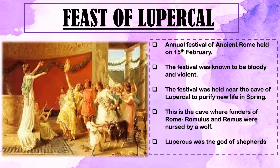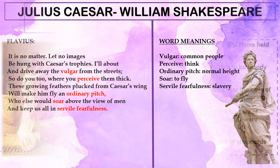The Feast of Lupercalia was celebrated every year on the 15th of February in ancient Rome to honor Lupercus, the god of shepherds. It was considered a violent and bloody festival. It is important because Romulus and Remus, the founders of Rome, were said to have been cared for by a wolf in a cave. The festival was held near the cave of Lupercalia to purify new life and spring, and to honor that legendary deed.